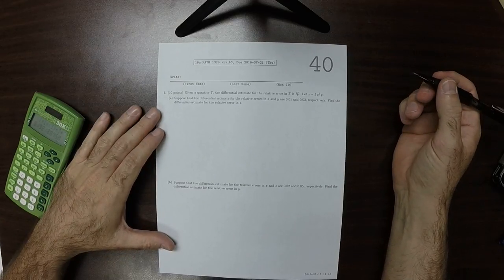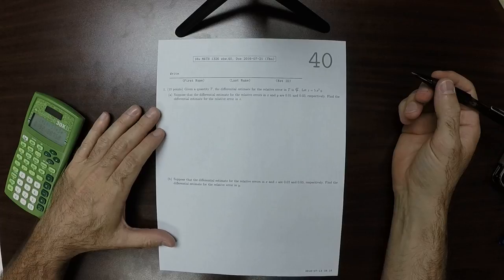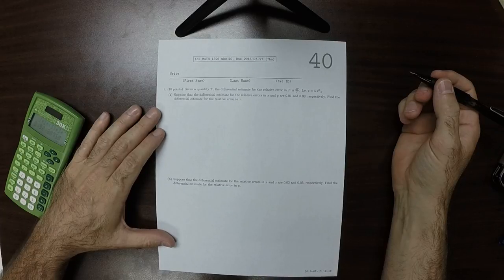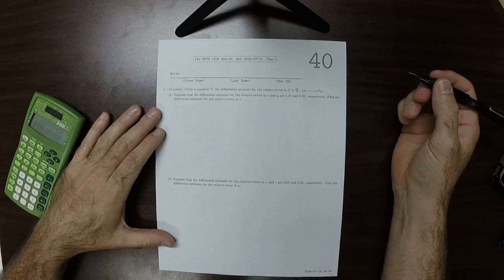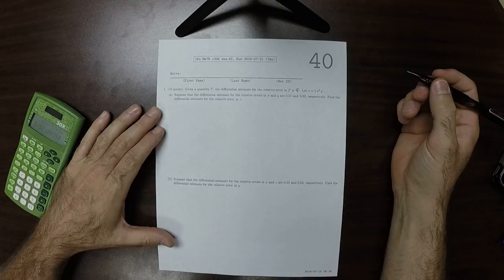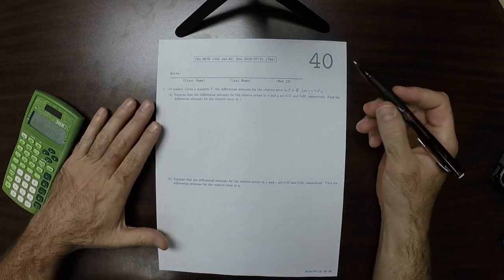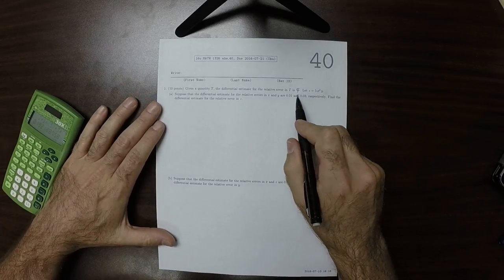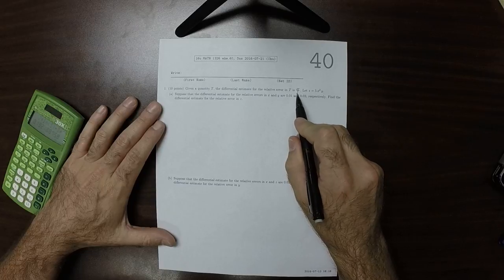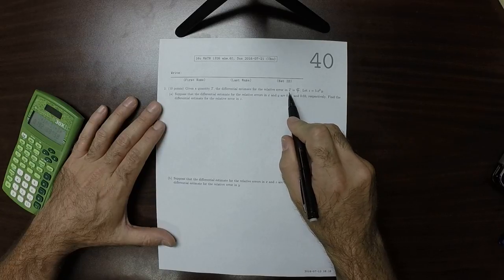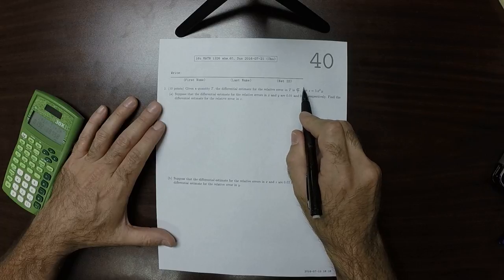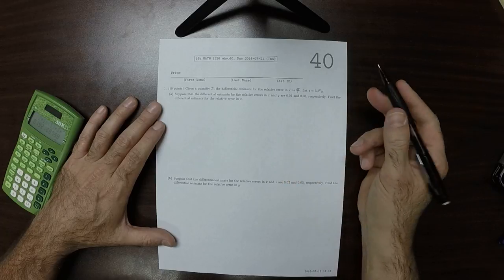This is the solution to written homework 40. This exercise is about the relative error. So if we have a quantity t, the absolute error is dt and the relative error is dt over t.